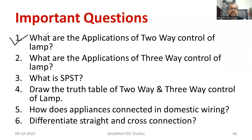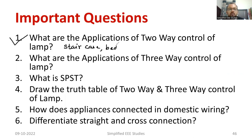The first question: what are the applications of two-way control of lamp? The main application is used in domestic wiring, especially in the staircase. You can also use it in the bedroom. In the sense, one bulb is going to be controlled by using two switches which are in different positions.